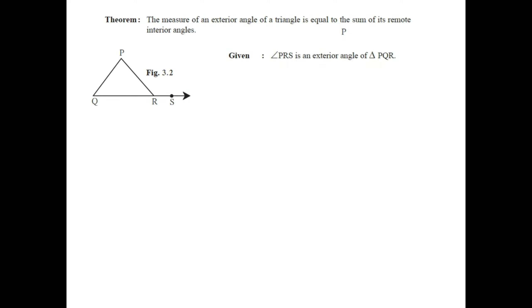We have to prove that the measure of angle PRS is equal to the sum of its remote interior angles. For angle PRS, the remote interior angles are angle PQR and angle QPR. So we need to prove that angle PRS = angle PQR + angle QPR.